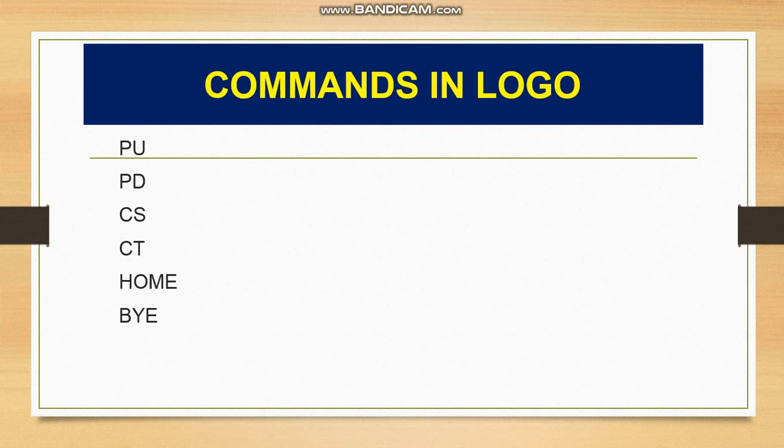After that is CS, which means clear screen. The clear screen command is used to erase everything from the graphics area — that is, the main screen where the drawing is made. We can use this CS command to delete or erase the drawing.